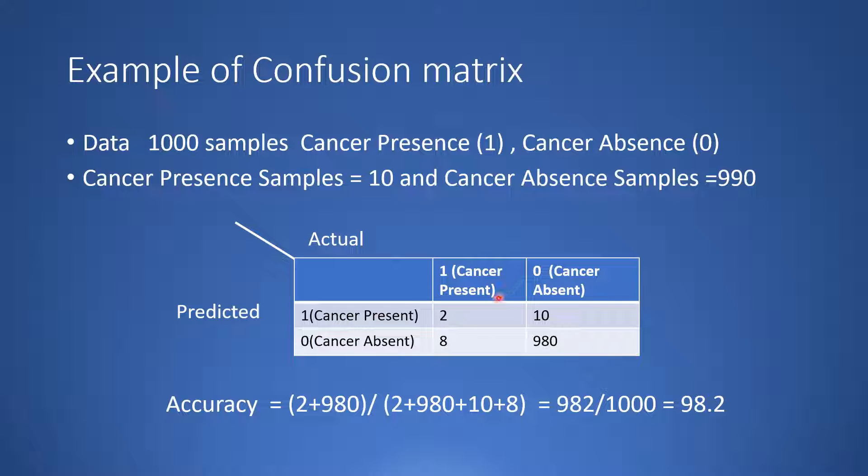If you look over here out of 10 samples which have cancer, only 2 are predicted as having cancer, 8 is being predicted as cancer is absent.